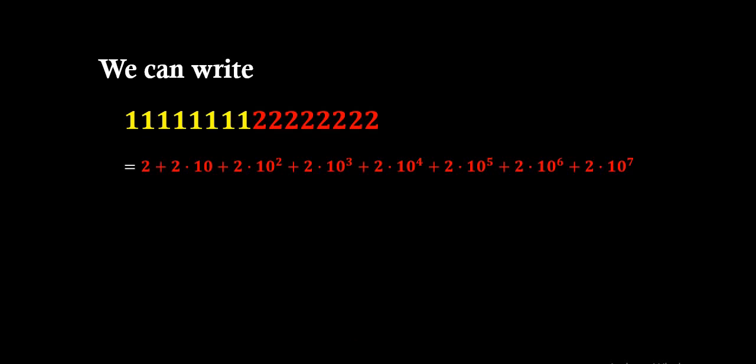Now we can write the right-side number 1111111122222222 in expanded form as 2 plus 2×10 plus 2×10² plus 2×10³ plus 2×10⁴ plus 2×10⁵ plus 2×10⁶ plus 2×10⁷. We can take 2 as a common factor, so the expression becomes 2 times (1 plus 10 plus 10² plus ... up to 10⁷).